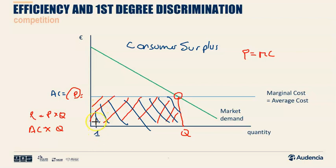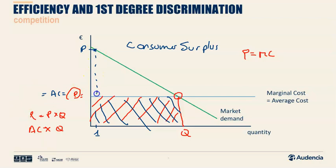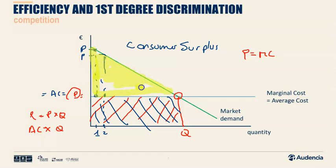We can line up all these individual bargains — every unit where the consumer's willingness to pay exceeds the market price — and see the total consumer surplus as the area below the demand curve and above the price. All of that yellow space represents consumer surplus under competition.